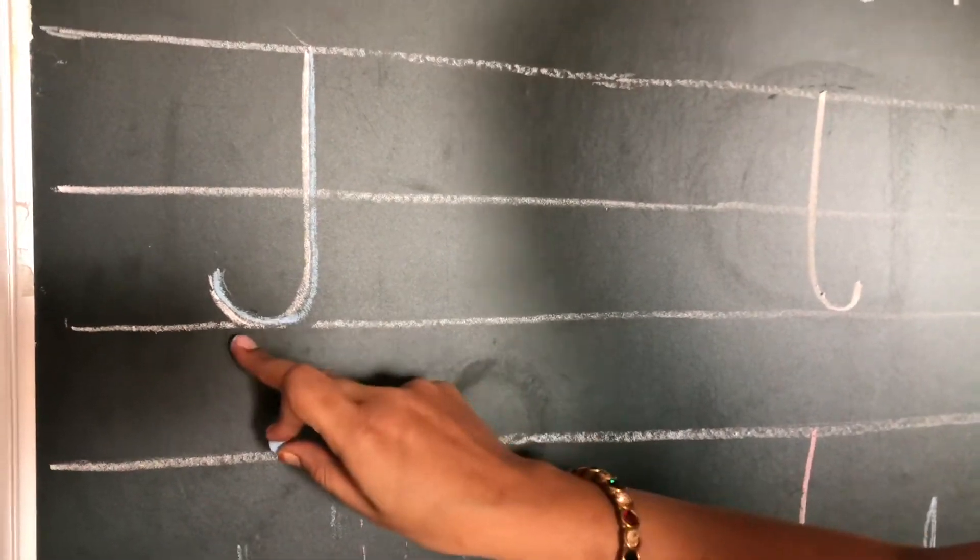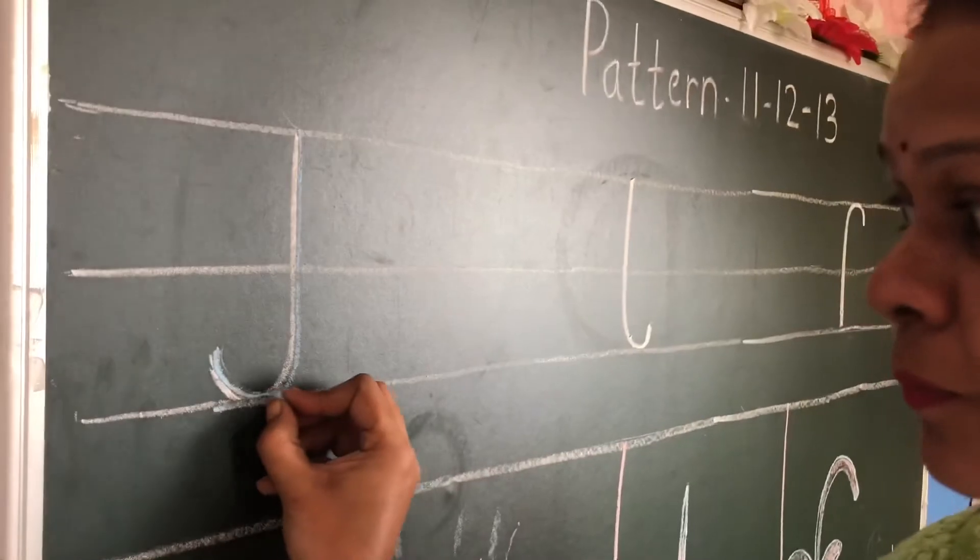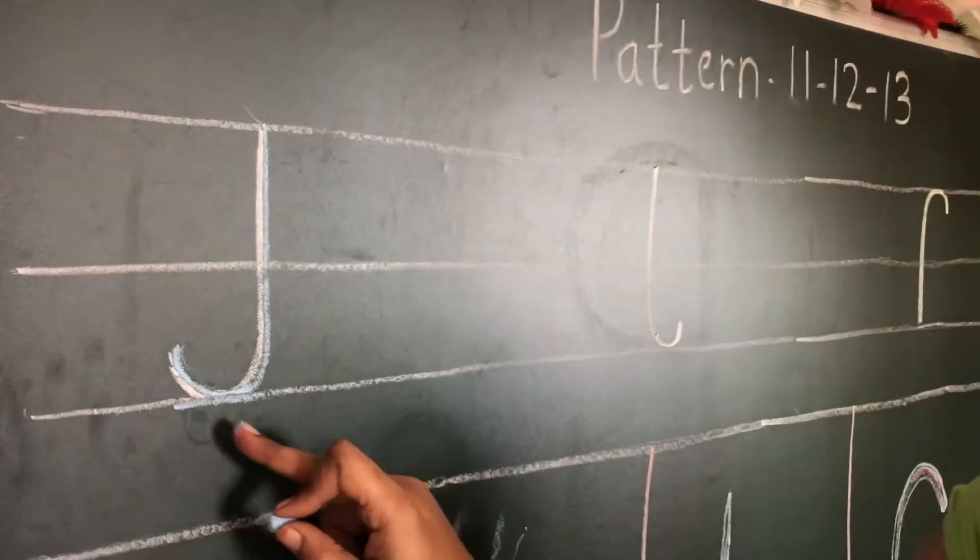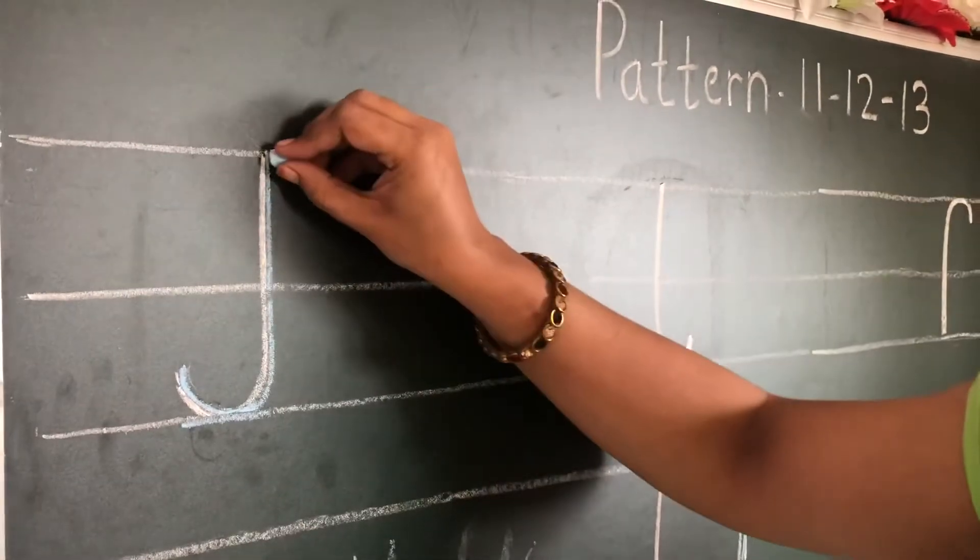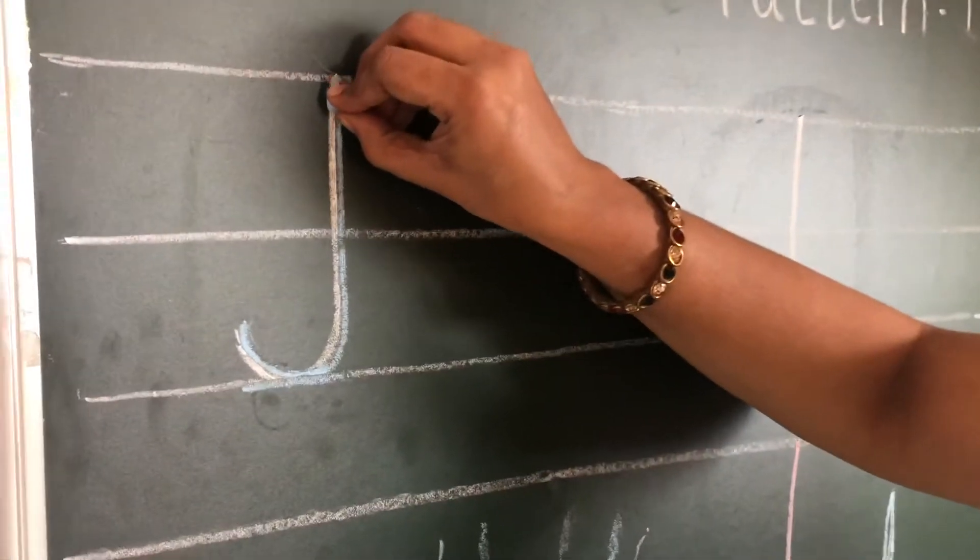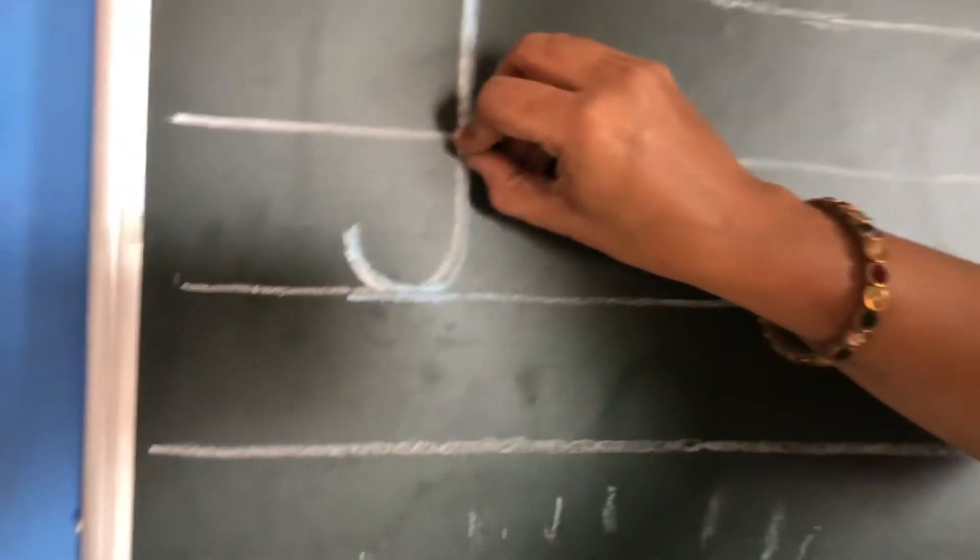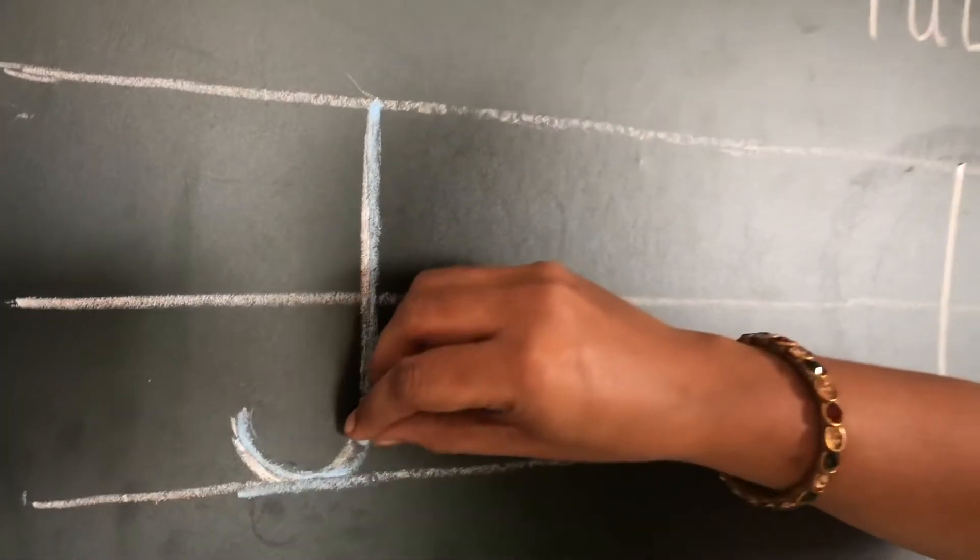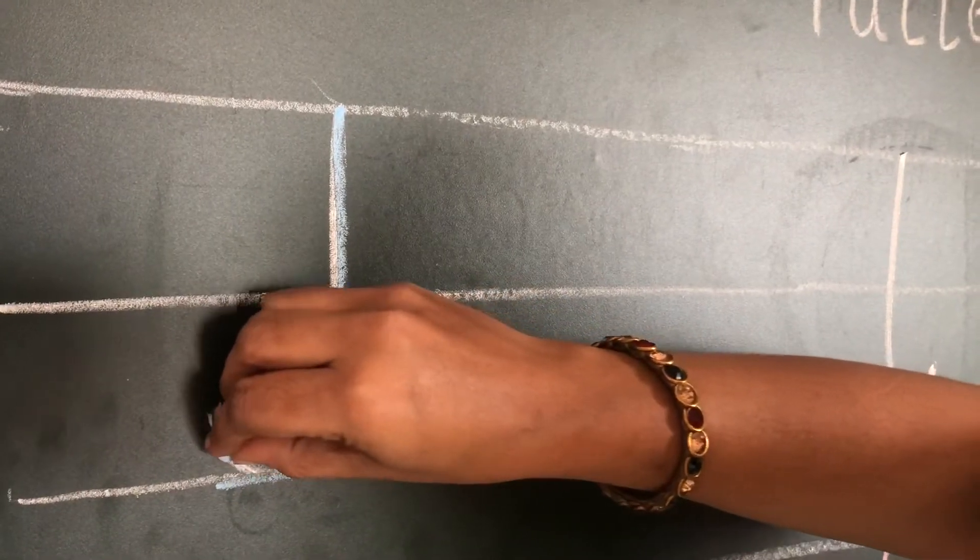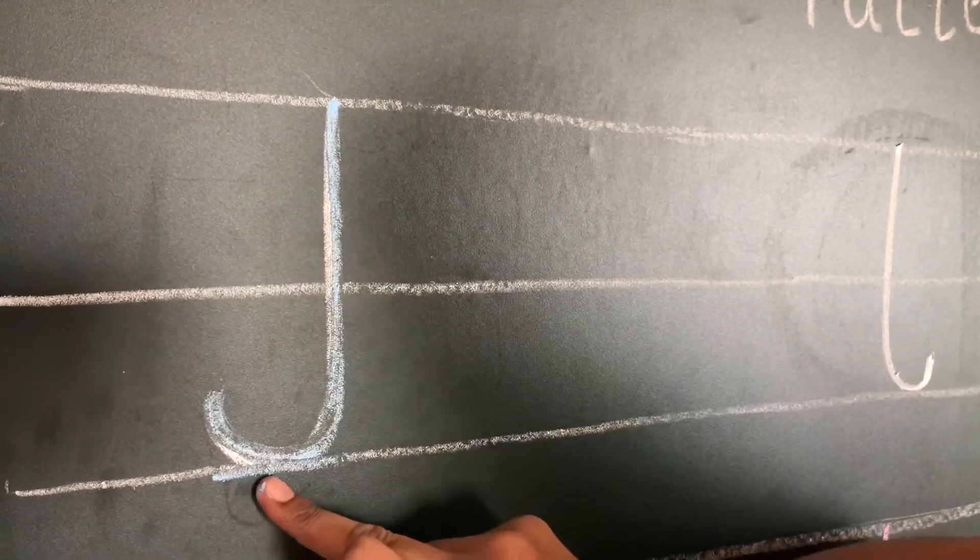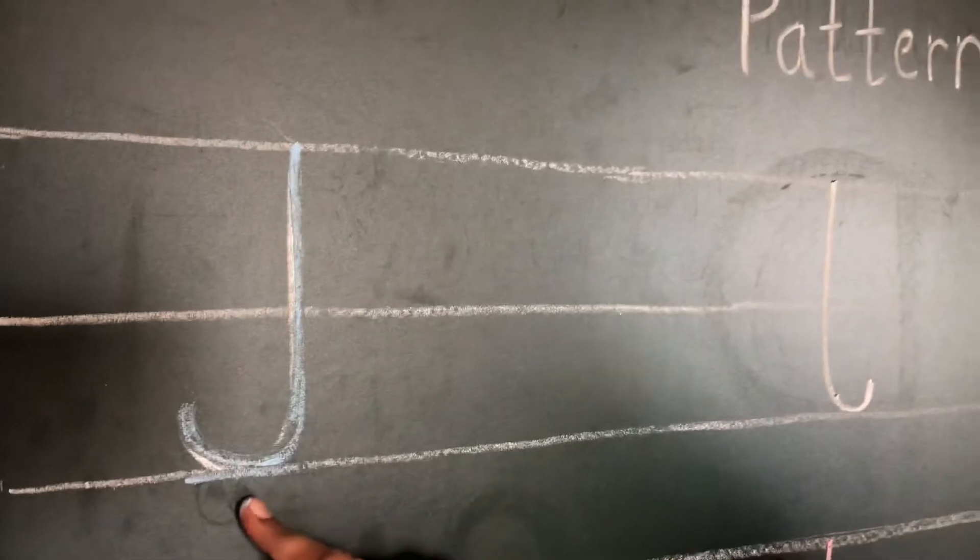See, you always have to touch the line. I will repeat. First you have to draw a standing line, then you have to take a turn, and always remember to touch this line.